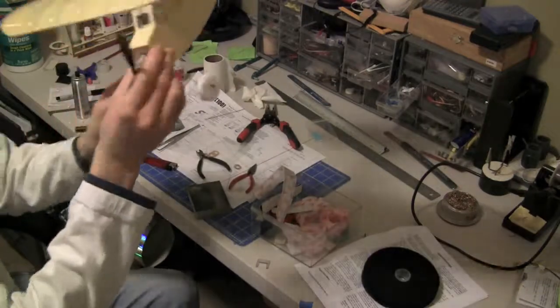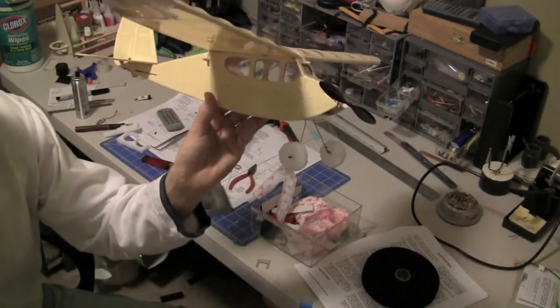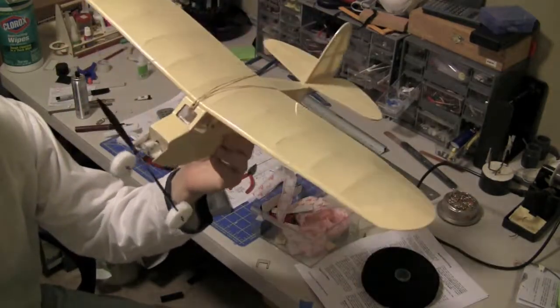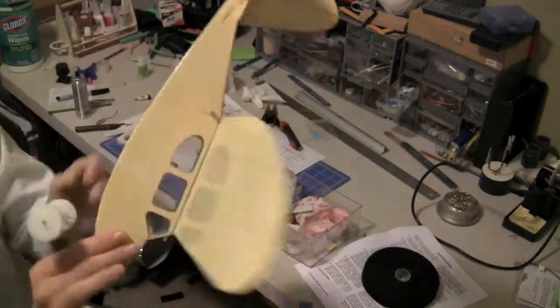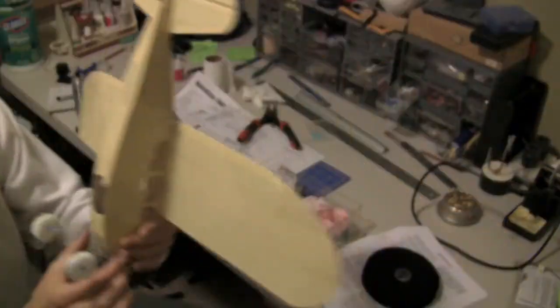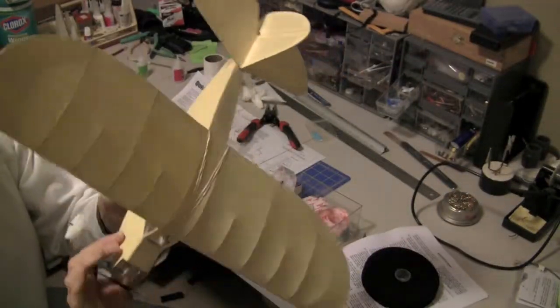Went ahead and put some tires on it. Got some EPP foam and just made some tires. Put the battery in it. As you can see, just the one cell. It's actually 180 milliamp Hyperion.